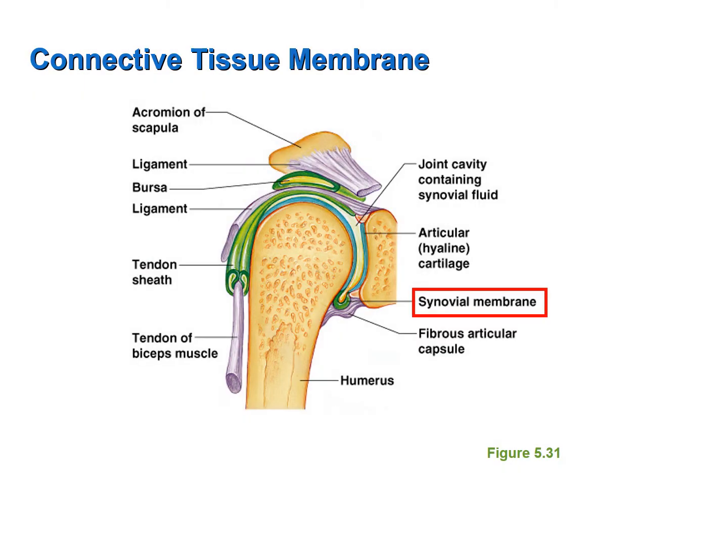This slide shows another example of a synovial joint — the shoulder joint, where the scapula articulates with the humerus of the arm. Notice that the synovial membrane lines the surface of the joint and again produces the synovial fluid that lubricates the joint.